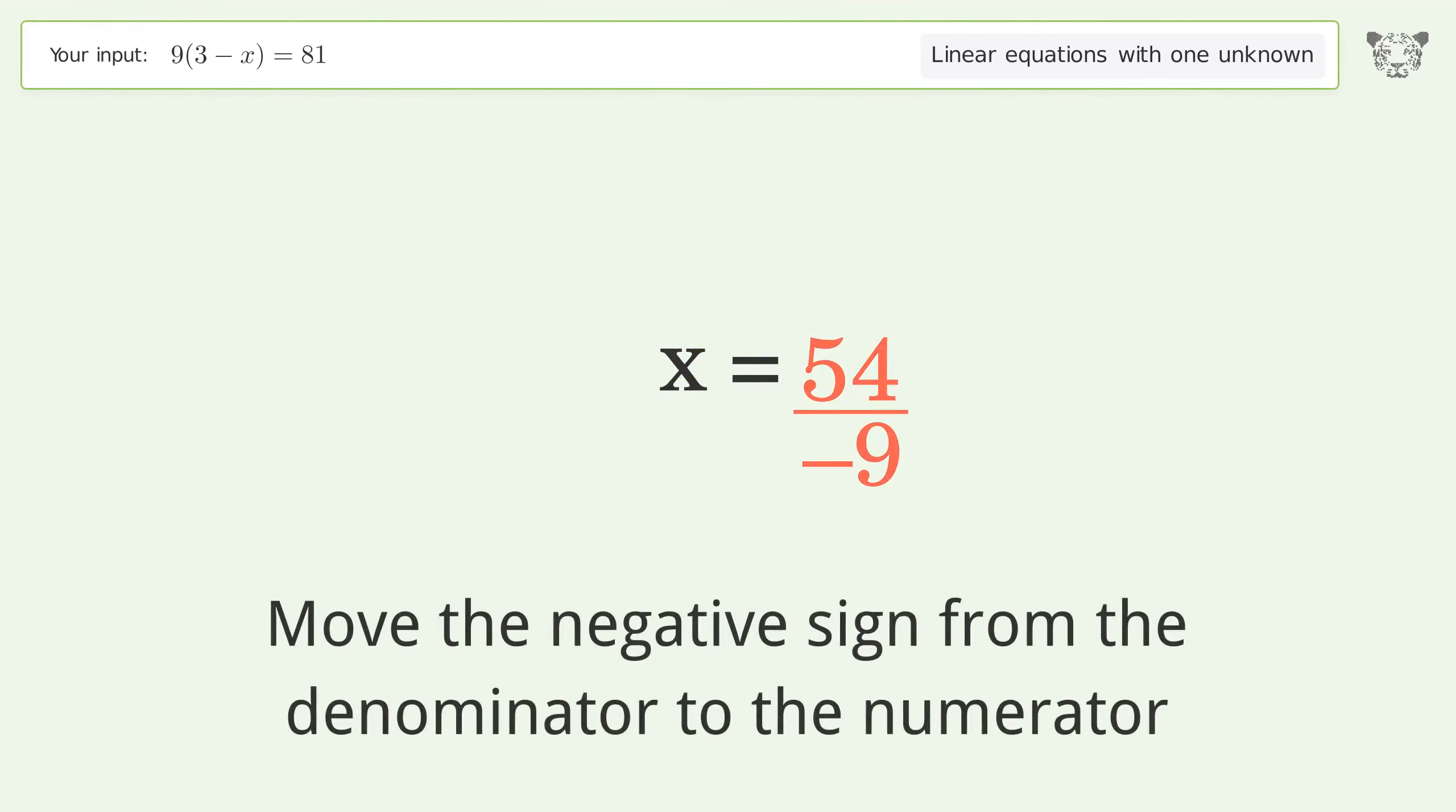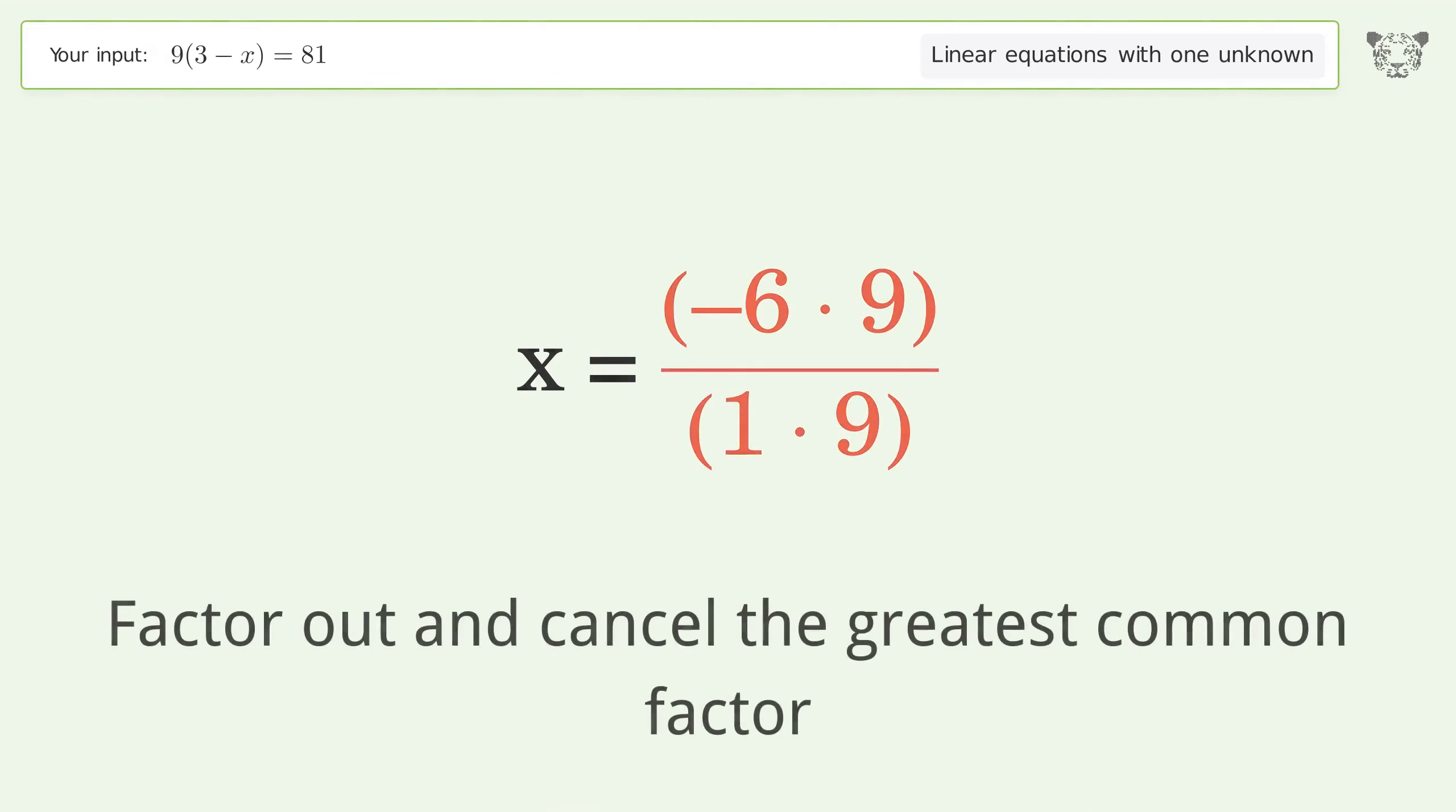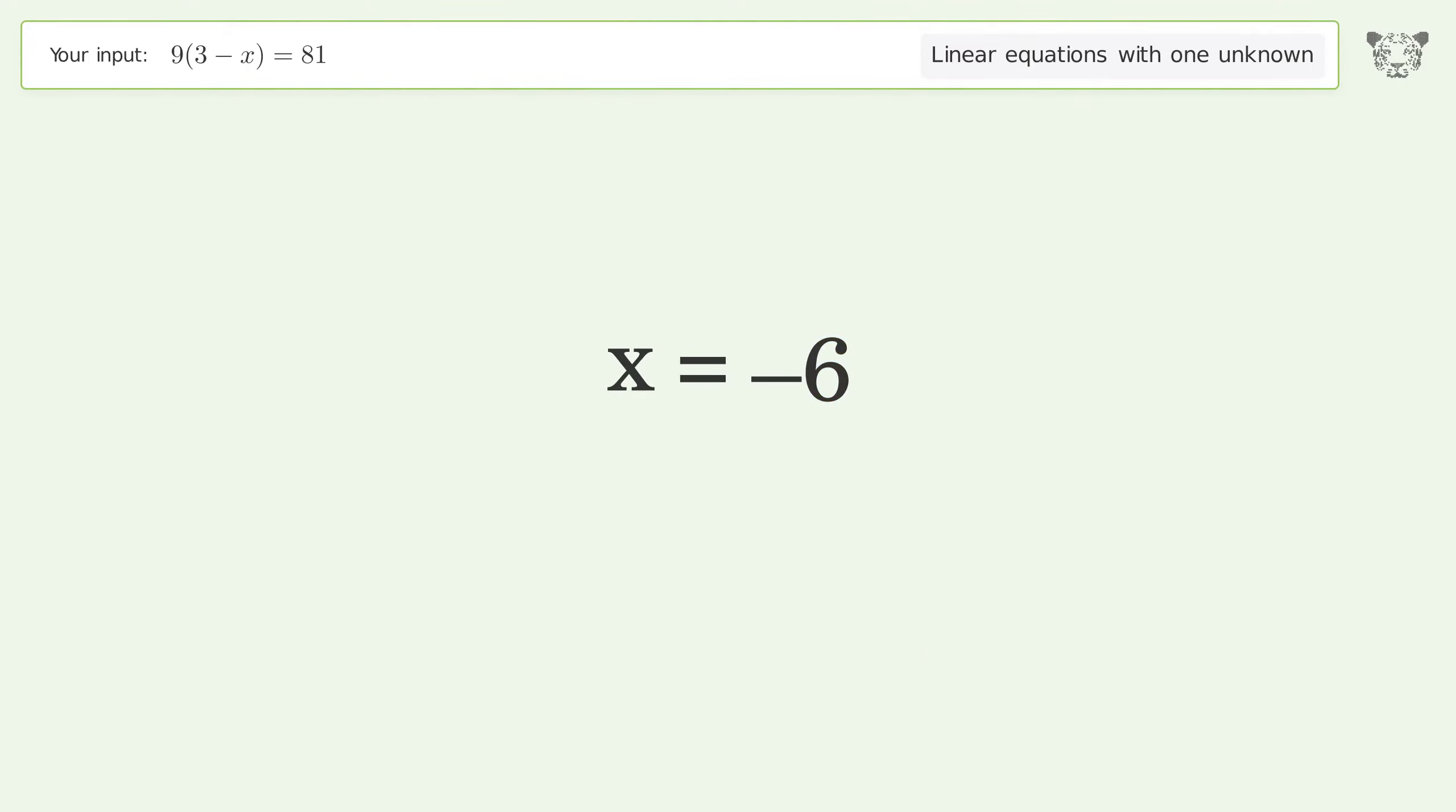Move the negative sign from the denominator to the numerator. Find the greatest common factor of the numerator and denominator. Factor out and cancel the greatest common factor. And so the final result is x equals negative 6.